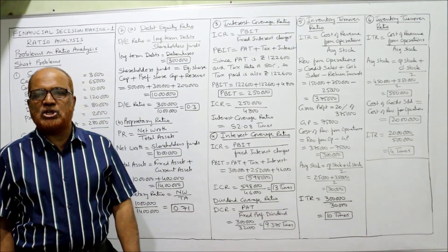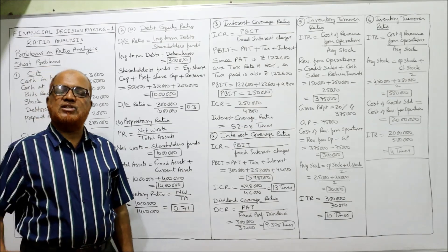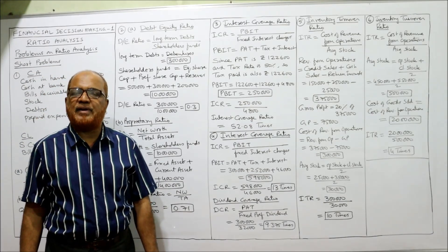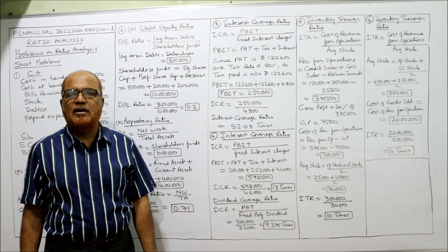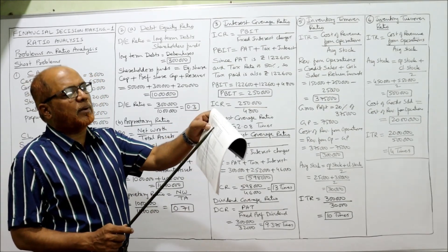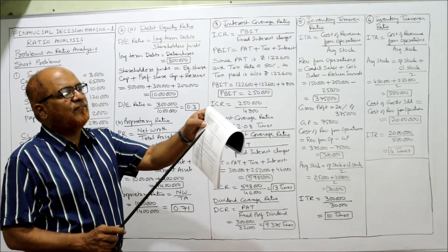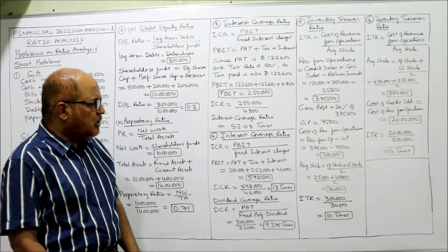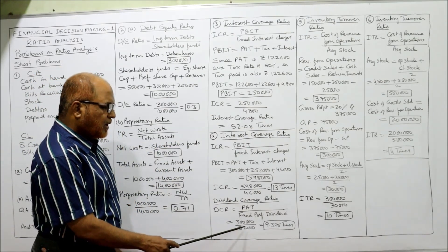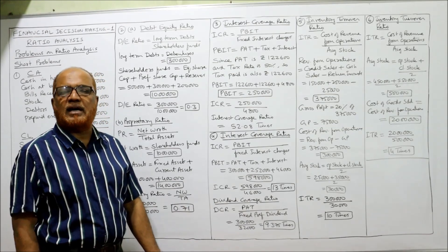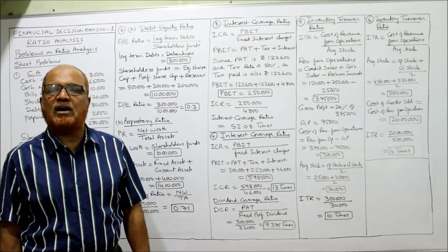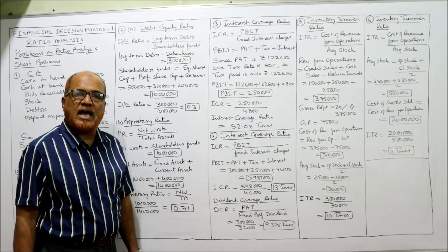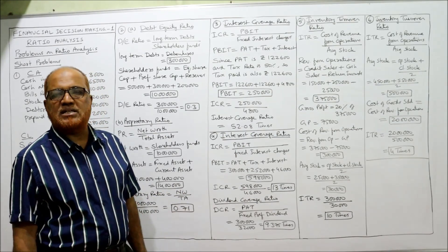Now dividend coverage ratio. The formula is PAT divided by fixed preference dividend. PAT is 3,00,000 and fixed preference dividend is 32,000. So 3,00,000 divided by 32,000 gives 9.375 times. This is the dividend coverage ratio. So we have calculated both coverage ratios: interest coverage and dividend coverage.